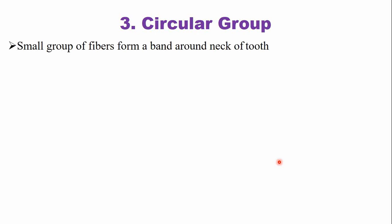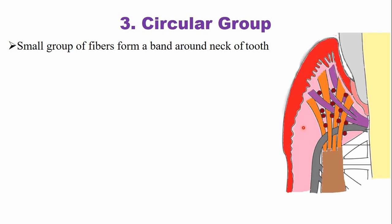The next group is the circular group of fibers. These are a small group of fibers that form a band around the neck of the tooth.